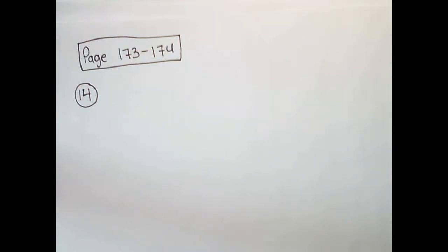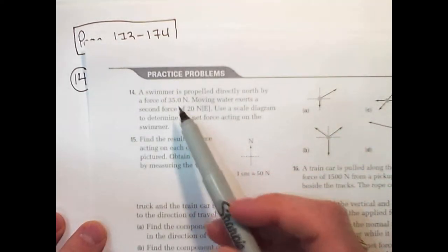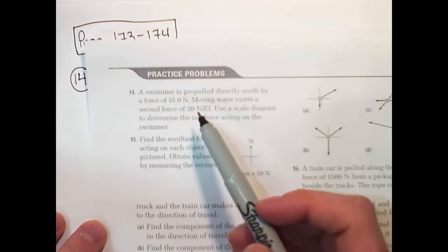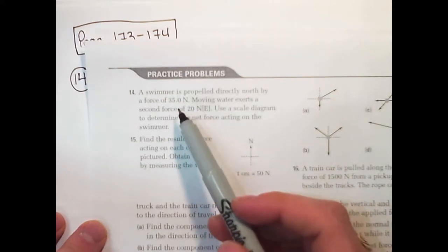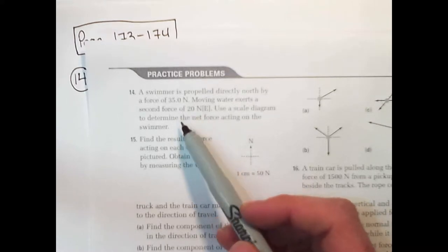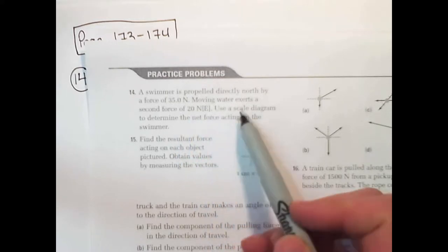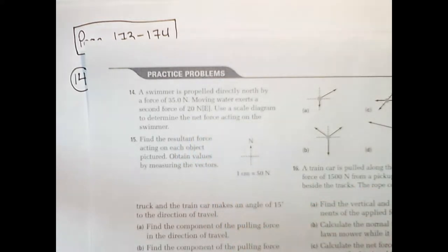We are going to have a look at some of the various dynamics questions assigned through our section. The first one we'll look at is on page 173, number 14. It says a swimmer is propelled directly north by a force of 35 newtons. Moving water exerts a second force of 20 newtons to the east. Use a scale diagram to determine the net force acting on the swimmer.